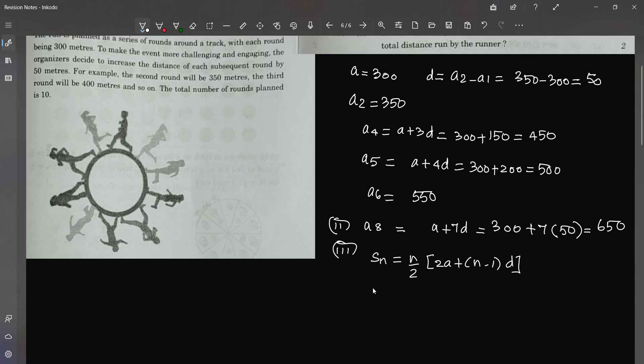So s10 will be, s10 is going to be 10 by 2, 2a, a is what 300, so 2a is 600 plus n minus 1 is 9 times d is 50. So the answer is going to be 5 times 600 plus 450 is 1050.